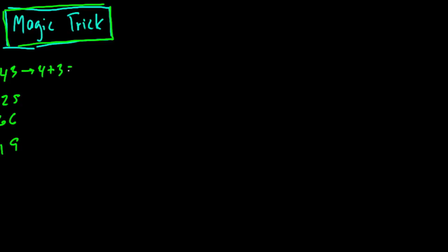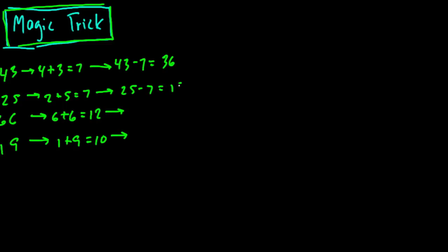In each of these cases, the first step is to add the digits. 4 and 3 is 7. 2 plus 5 is 7. 6 plus 6 is 12. And 1 plus 9 is 10. Then we subtract that from our original number. As Regifting Robin shows, you could just have your audience subtract, for example, 4 and 3 from 43. Here we'll just do 43 minus 7, which equals 36. Then 25 minus 7 gives us 18. 66 minus 12 gives me 54. And 19 minus 10 is 9.